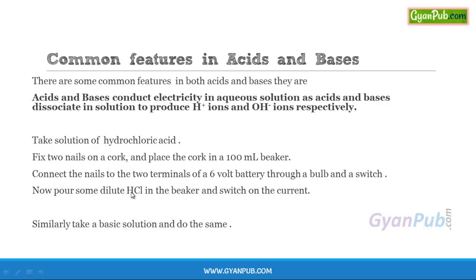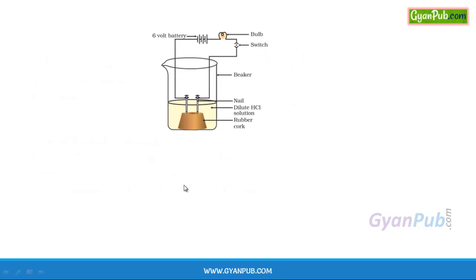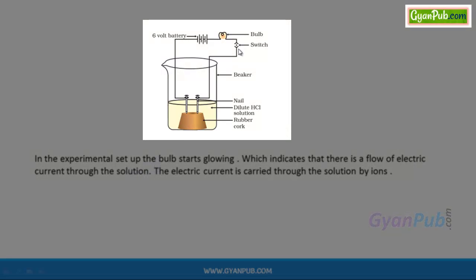Do a similar setup for a basic solution like sodium hydroxide and switch on the current in both setups. In both cases, we observe that the bulb starts glowing. Here we can see the hydrochloric acid setup with a cork fixed with two nails connected to a six-volt battery, bulb, and switch. When switched on, the bulb glows, indicating a flow of electric current through the solution.